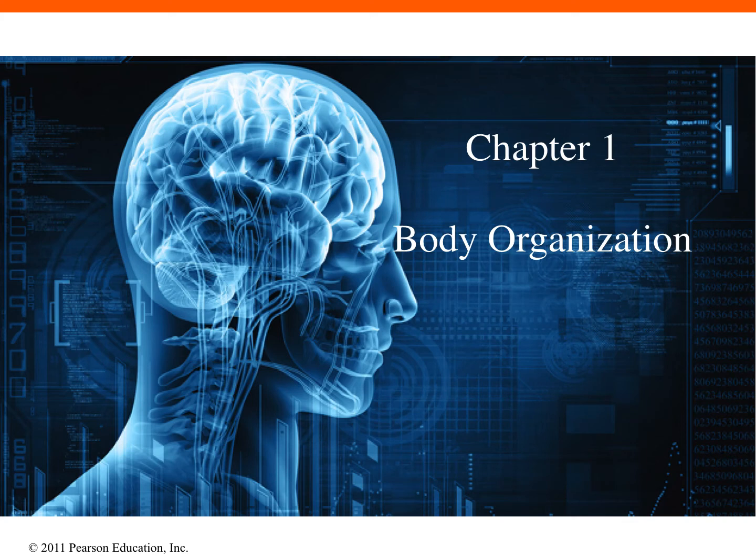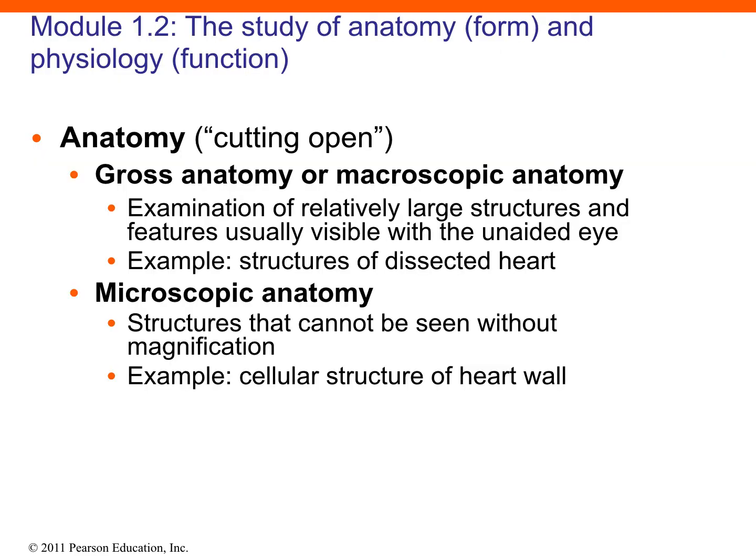This is Anatomy and Physiology 1, Chapter 1, Body Organization. Anatomy can be divided into two main categories: gross anatomy, or macroscopic anatomy, and the second is microscopic anatomy.